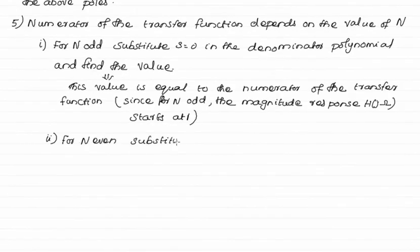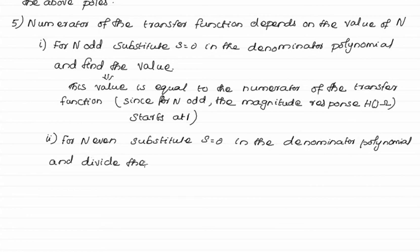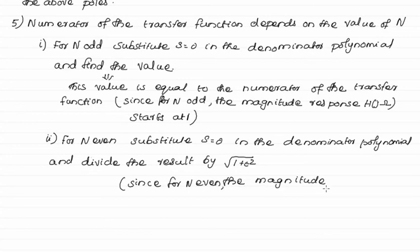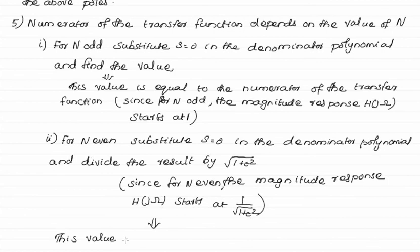For even n, substitute S = 0 into the denominator polynomial and divide the result by √(1+ε²). Since n is even, the magnitude response starts at 1/√(1+ε²), and this value equals the numerator of the transfer function. By following this procedure, you can find the transfer function of an analog Chebyshev low-pass filter.